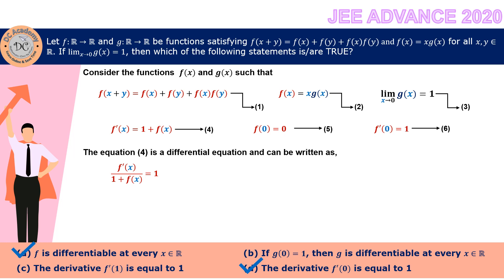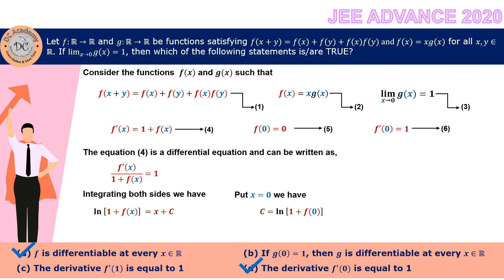Integrating both sides, since the derivative of the denominator equals the numerator, we get ln(1 + f(x)) = x + c. To find c, we use f(0) = 0: ln(1 + 0) = 0 + c, so c = 0. Therefore ln(1 + f(x)) = x, which gives 1 + f(x) = e^x, or f(x) = e^x - 1.